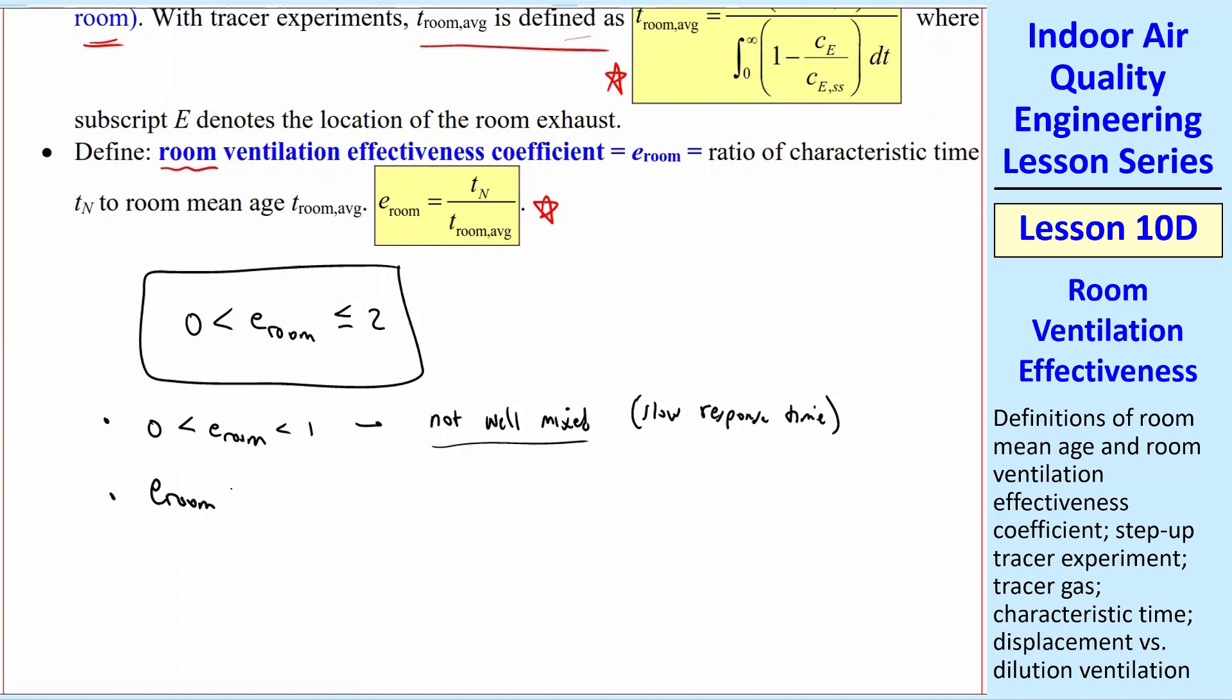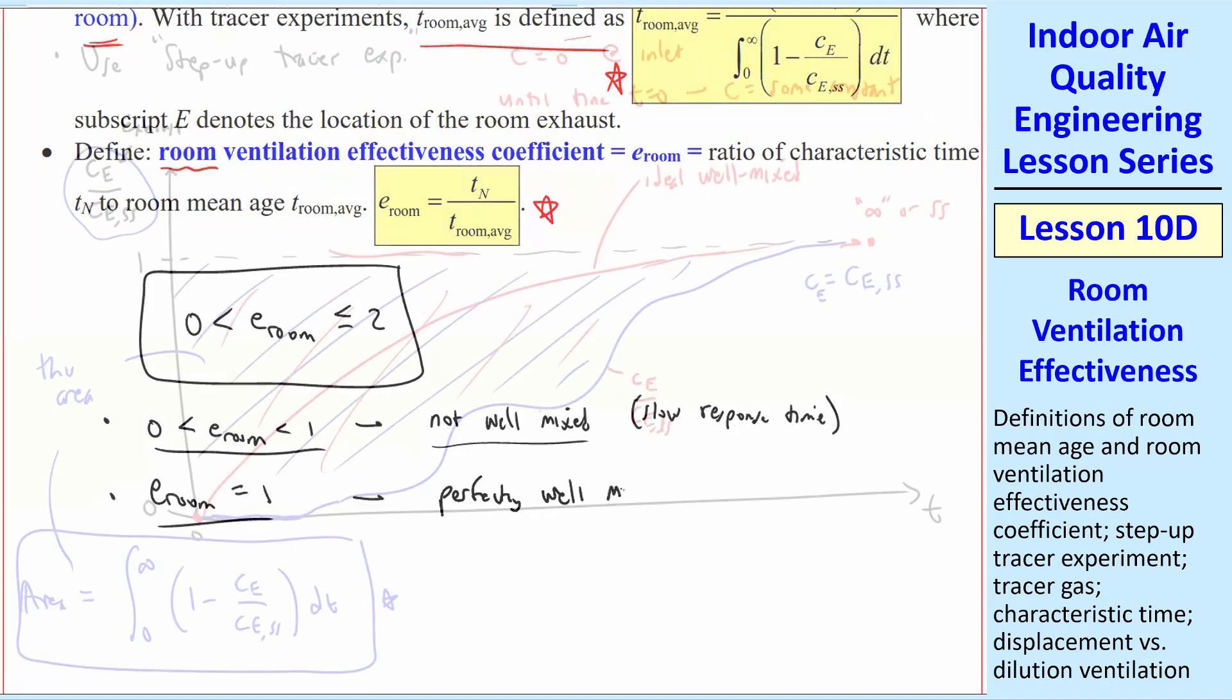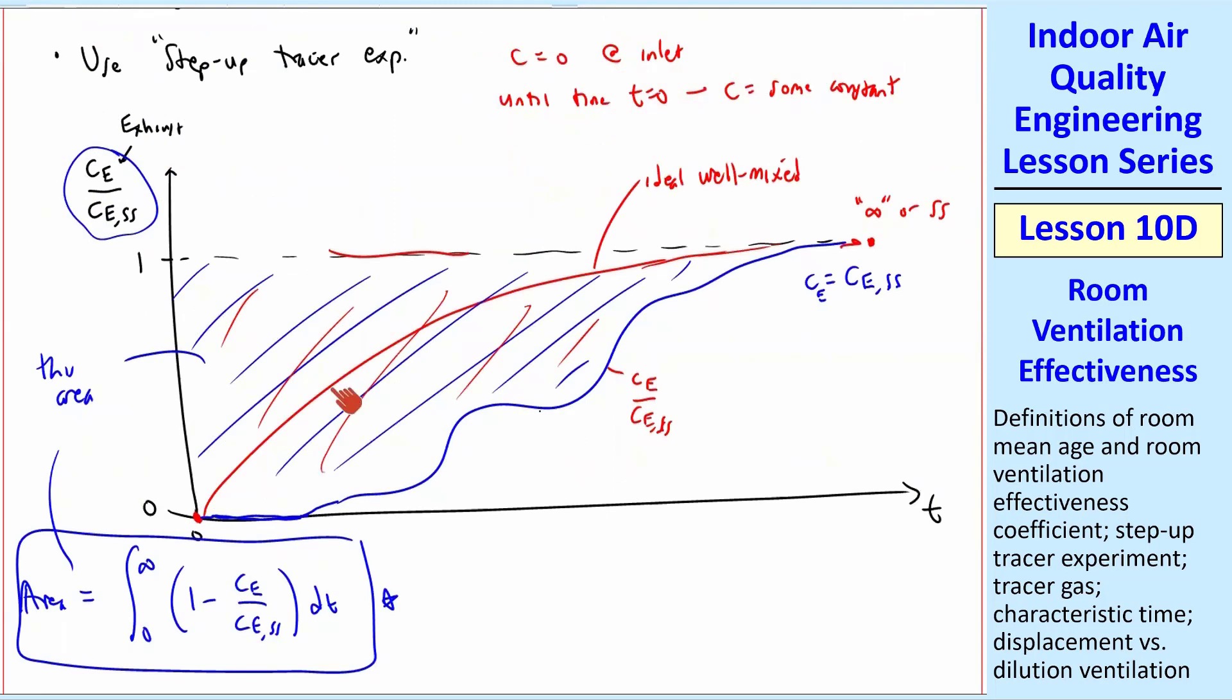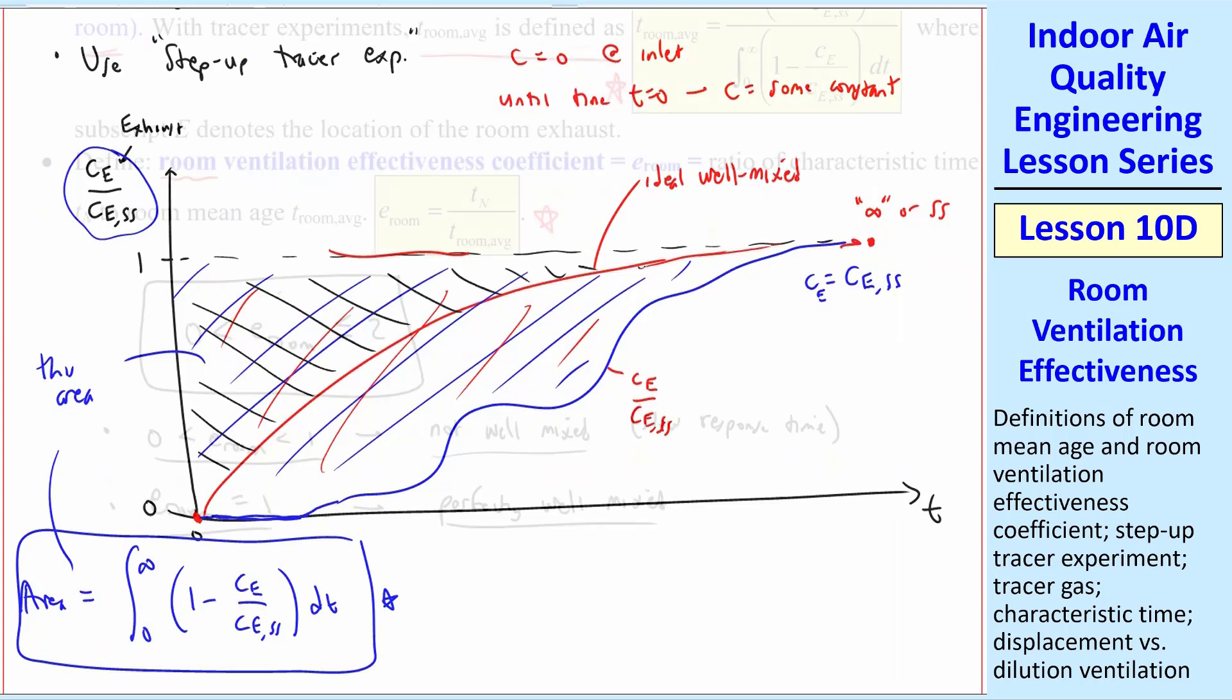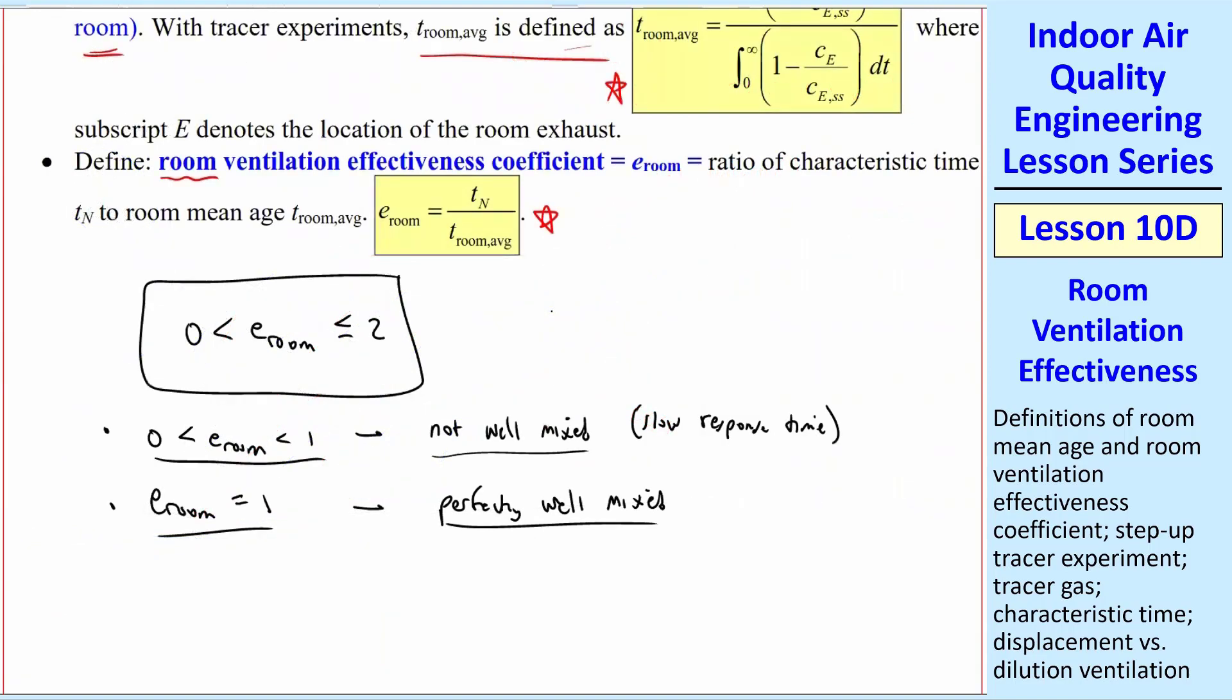If E room is equal to 1, this would be perfectly well mixed. So if you take this red curve here, which is the ideal well mixed case, and do the integral, it would be the area here above that curve. And we have an equation for that. If you go through the math, which I have done, you will find that E room is exactly 1, ideal dilution ventilation.